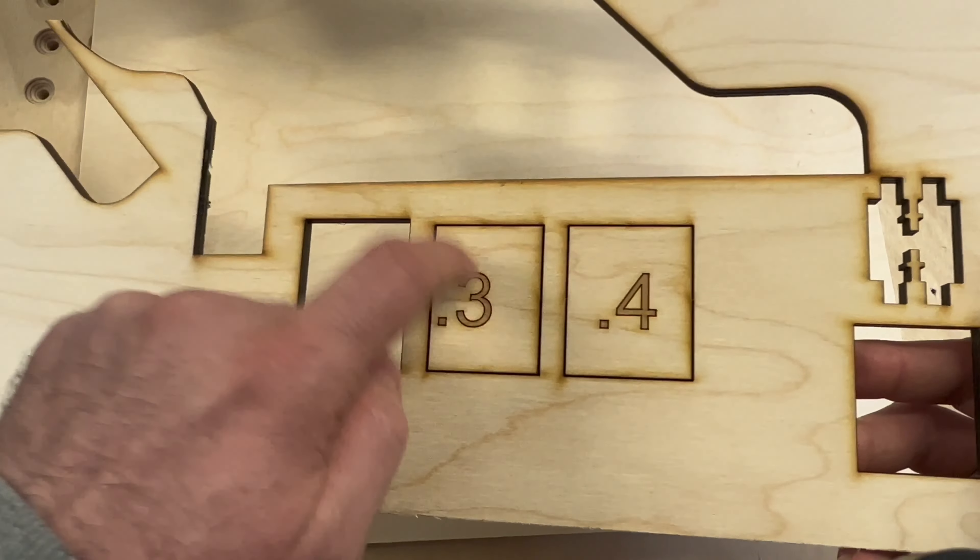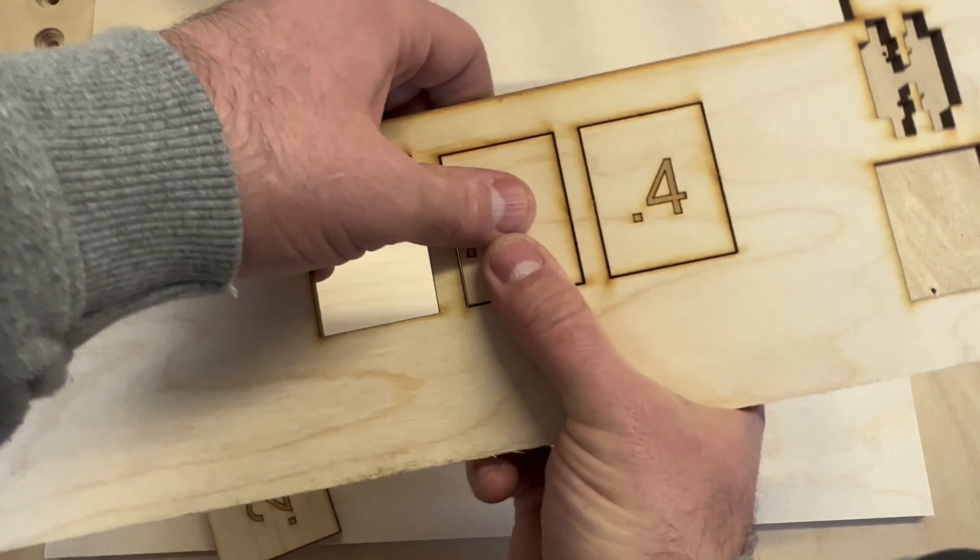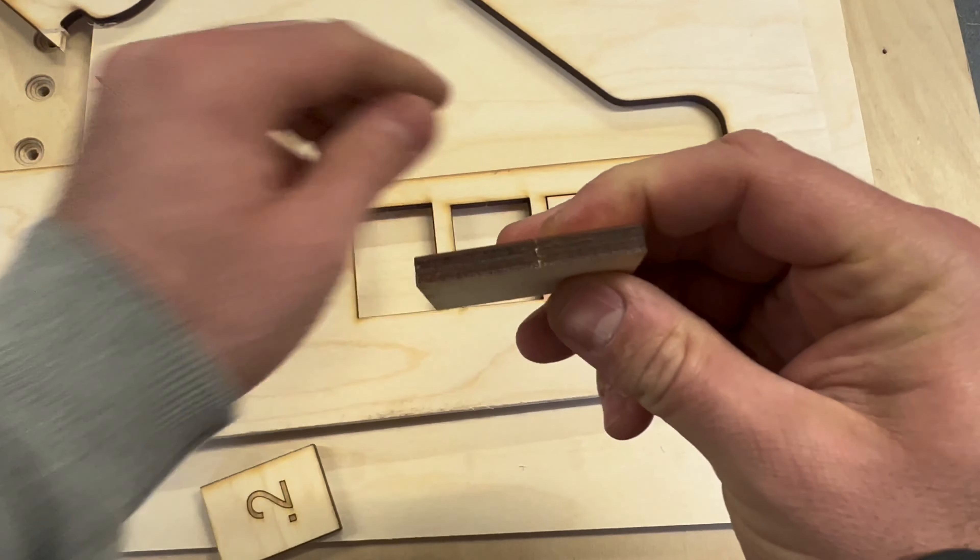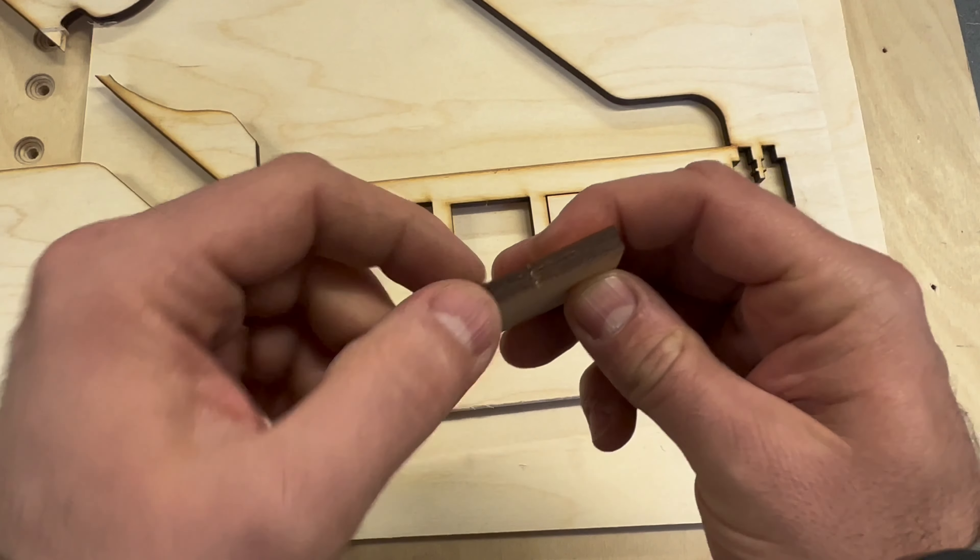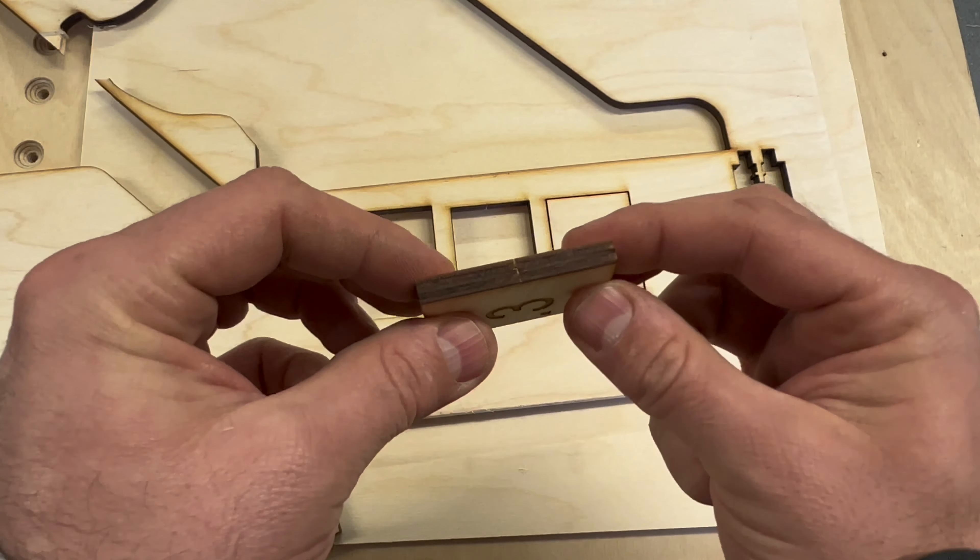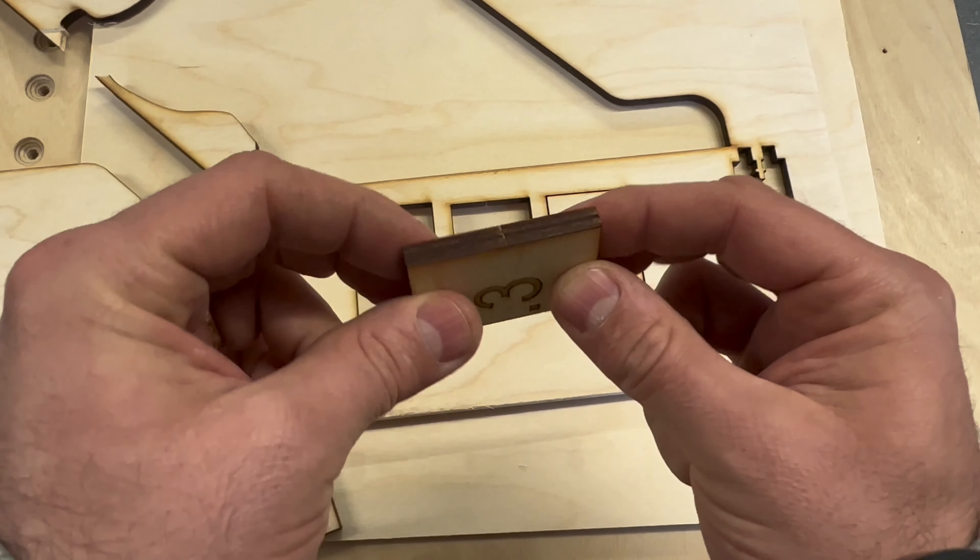The next one's 0.3, and you can see tapping it, it didn't fall out and it needed a good firm push to get out, but just enough that there's only a little piece of material left on the side, on the edge of the push out.